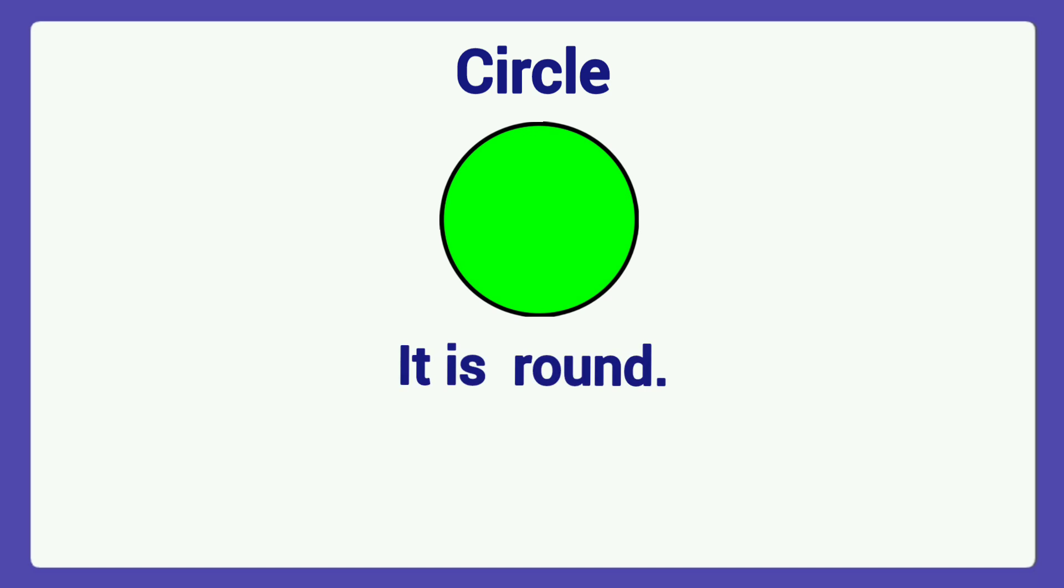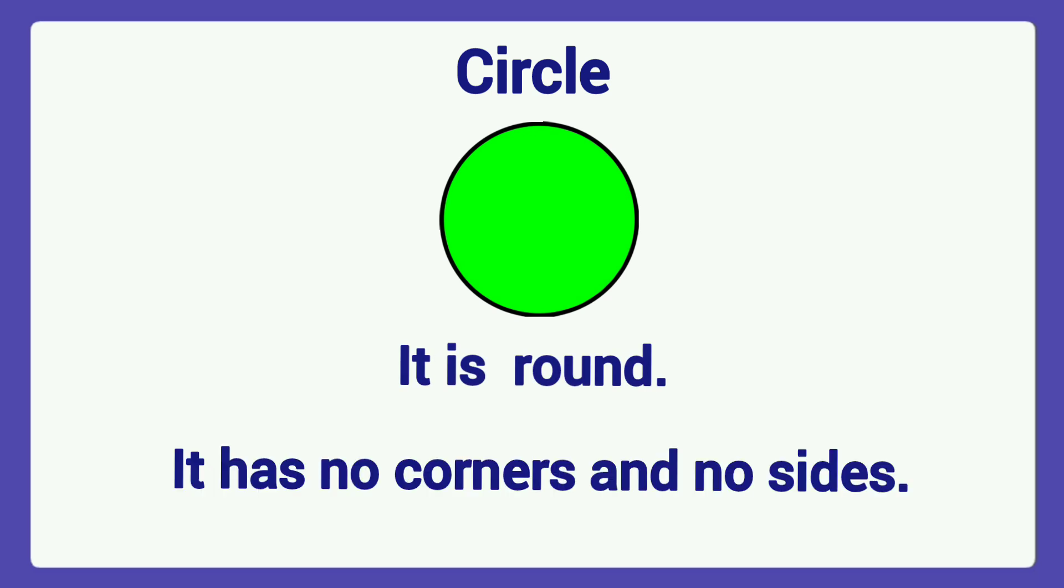Next one, this is a circle. It is round. It has no corners and no sides.